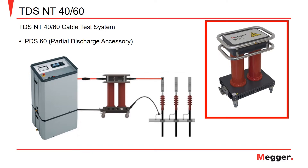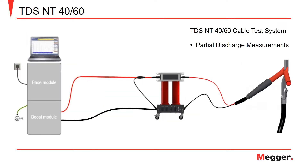To perform partial discharge measurements with the TDS-NT, the PDS-60 partial discharge coupler is required. To connect the TDS-NT for PD measurements, the high voltage lead is connected to the input of the PDS-60. Then the communication cable is connected to the comms port on the bottom of the coupler.